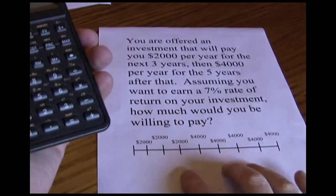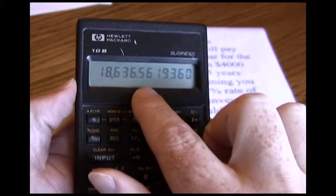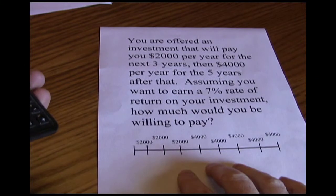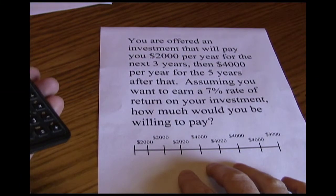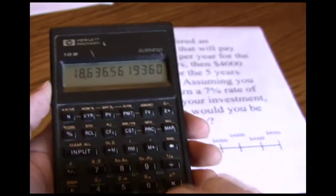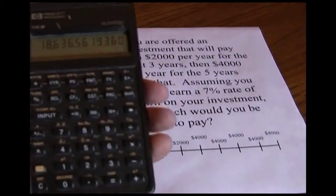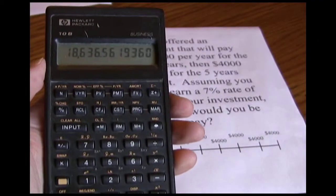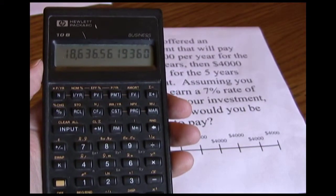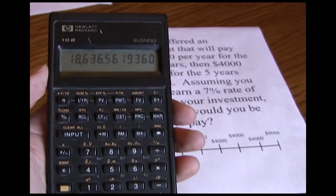If somebody offered us this investment opportunity for $18,000, we would accept it because it's worth more than $18,000 to us. On the other hand, if somebody offered it to us for $19,000, we would turn it down because it's only worth $18,636.56 — it's not worth $19,000. So once we know the present value, we can decide whether or not an investment is worthwhile. If it costs us less than the present value, we should accept the investment. If it's going to cost us more than the present value, we would reject the investment.